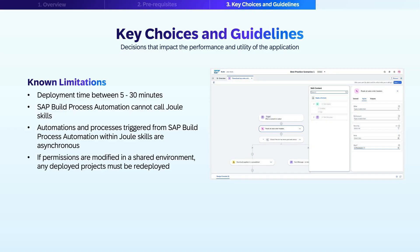Here are some limitations to be cautious of when designing a Joule skill. The deployment of Joule skills to an environment in the build tenant may require up to 5 to 30 minutes to complete. The field map function cannot directly map a list of objects pulled from an action component to downstream build components like RPA automation artifacts. As a workaround, you can pass the entire list as a generic object of data type any, though deployment of the Joule skill may result in an error. Joule skills can invoke published automations and processes from SAP Build Process Automation; however, the reverse — calling Joule skills from SAP Build Process Automation — is not supported.